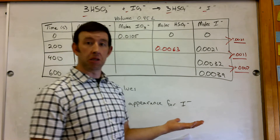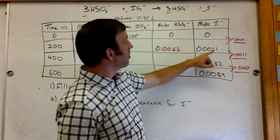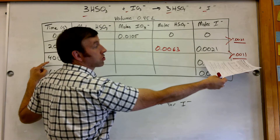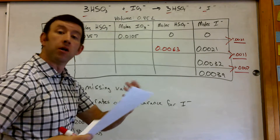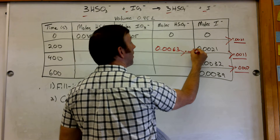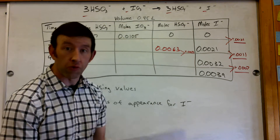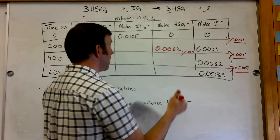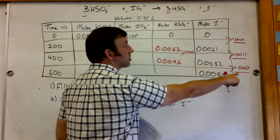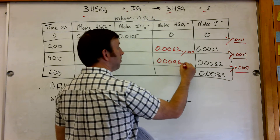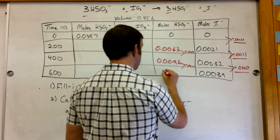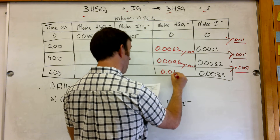Between 200 seconds and 400 seconds, my change for iodine is 0.0011, so my change for hydrogen sulfate is going to be triple: plus 0.0033, which gives me 0.0096. And here, since my change is 0.0007, my change will be plus 0.0021, which gives me 0.0117.